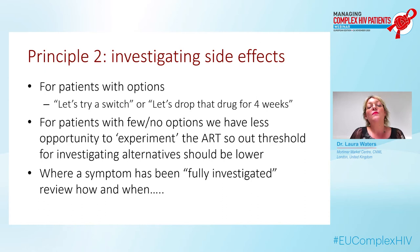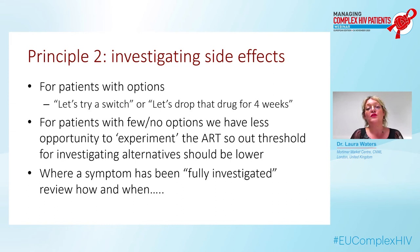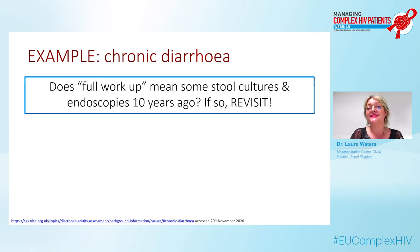Principle two is around investigating side effects and being very certain that a drug is responsible. If a patient is first or second line with multiple different drug options, it's very straightforward to try a switch or drop a drug to decide if it's the causative problem. But where patients have fewer or no options, we have less opportunity to experiment, so the threshold for investigating alternatives should be lower — you do tests before you blame the drug. Where a symptom has been fully investigated, we must review carefully how and when, because not all appropriate tests may have been undertaken and tests may have evolved since the last screening.